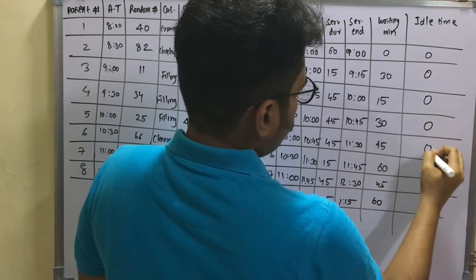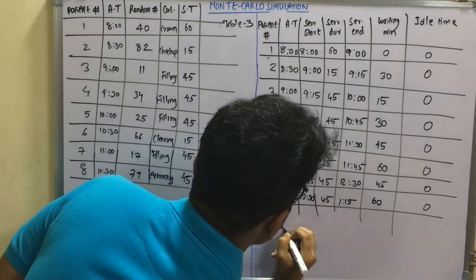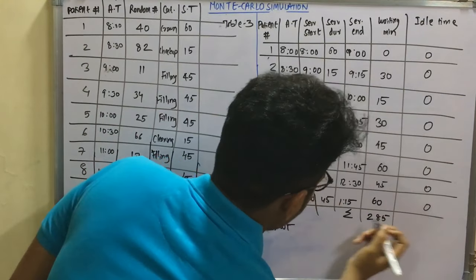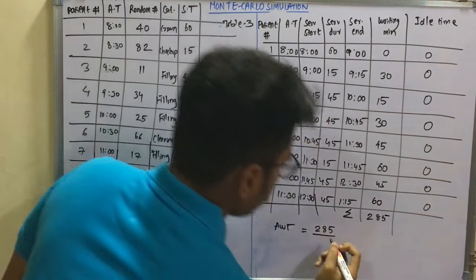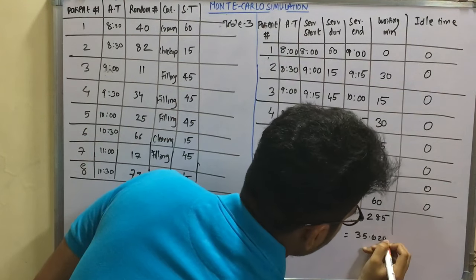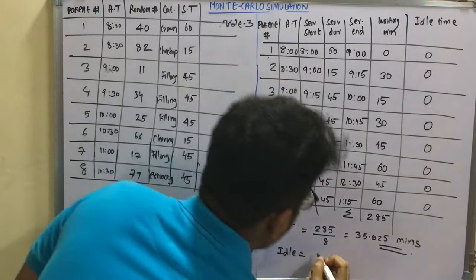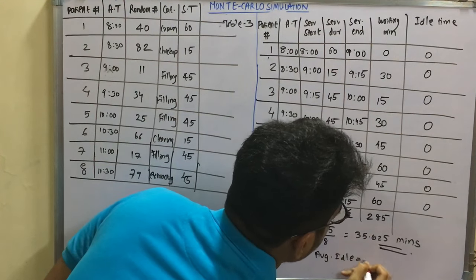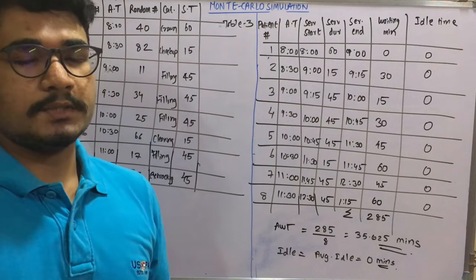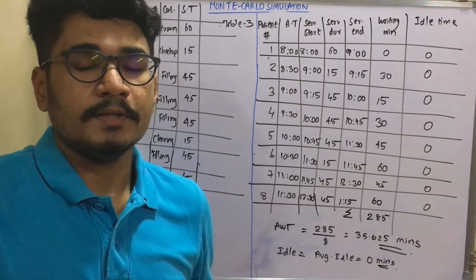The doctor was never free throughout the day, making it a very hectic simulation. The total waiting time across all patients is 285 minutes. Average waiting time equals 285 divided by 8 patients, giving 35.625 minutes. The idle time of the doctor was 0 minutes, as the doctor was never idle. This concludes the Monte Carlo simulation problem in simulation modeling.